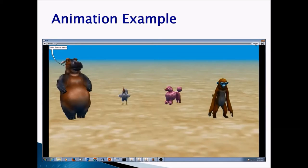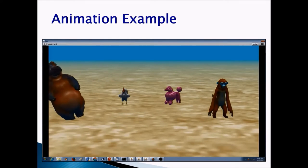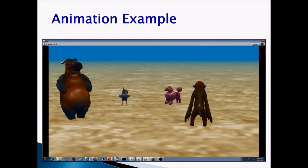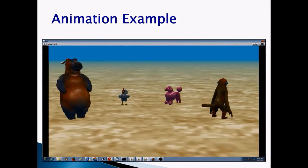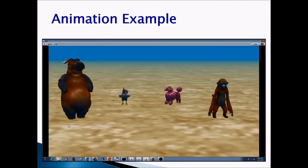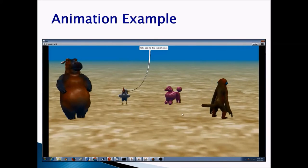Now let's take a look at our animation example. In our animation, we are going to add objects from different classes. Chicken is a flyer class, dog is a quadruped, and monkey has two legs and is a biped.